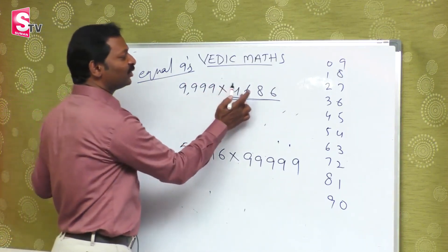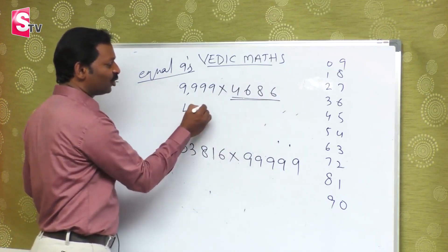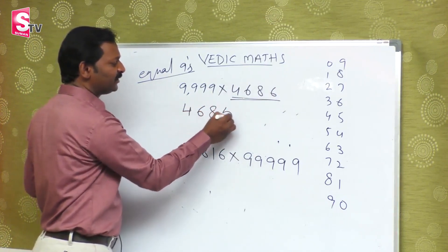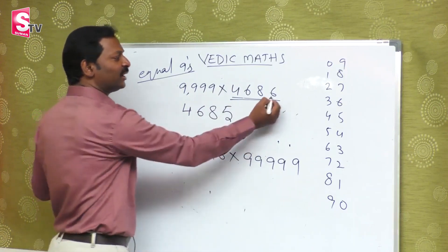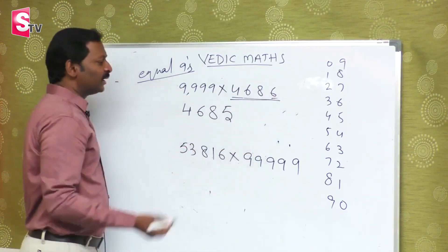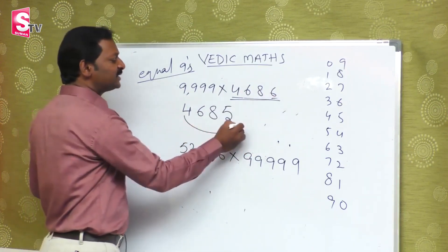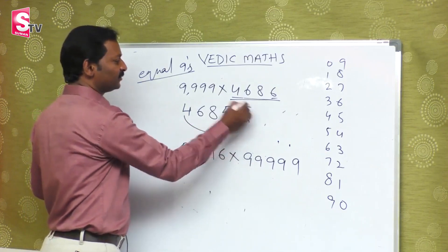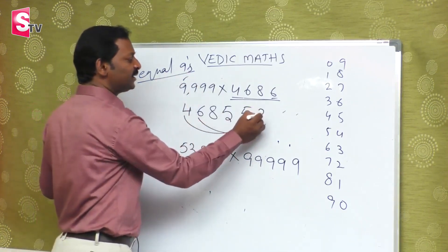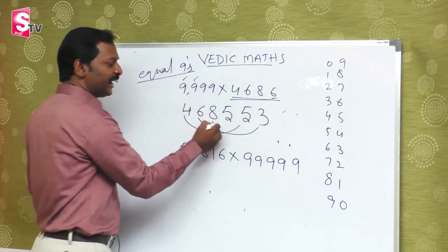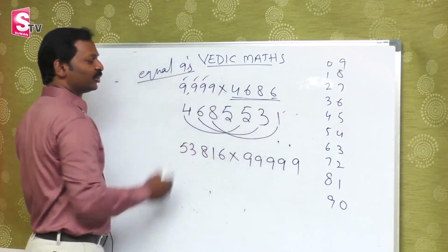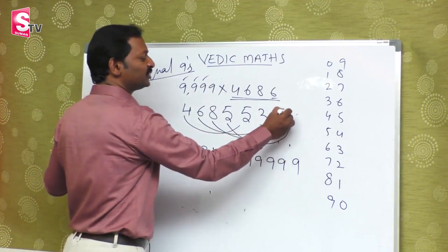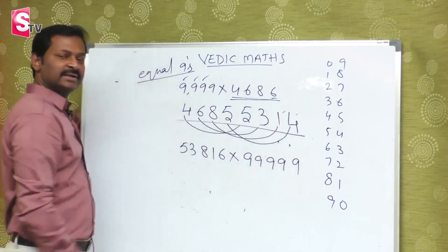First, you need to take the number 4,686. The answer starts with 4,685. It's called the base. Next, find the complement of 4. The complement is 5,314. This is the right answer. I hope you understood.